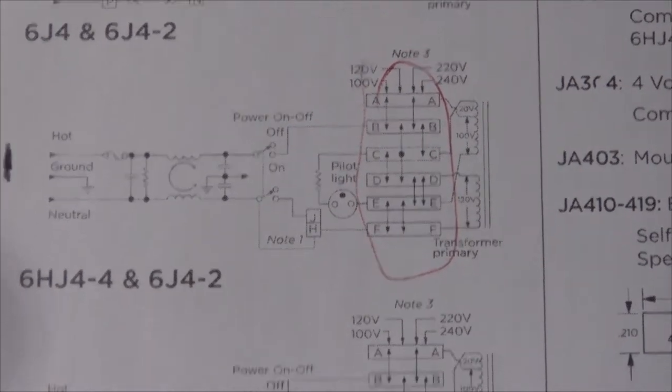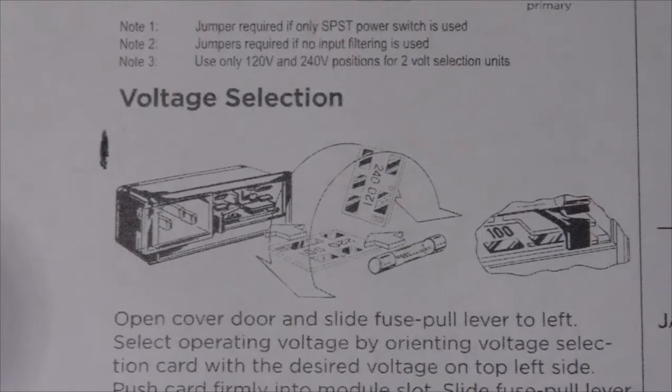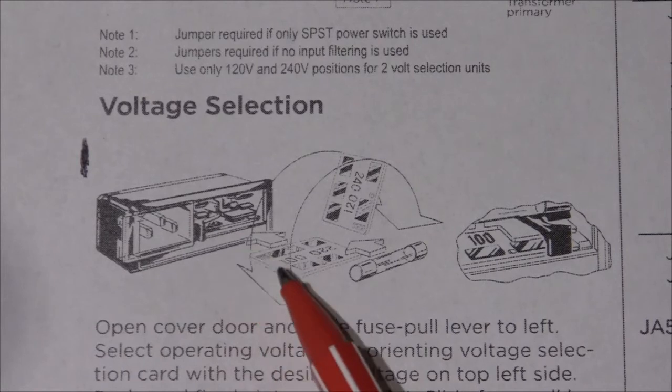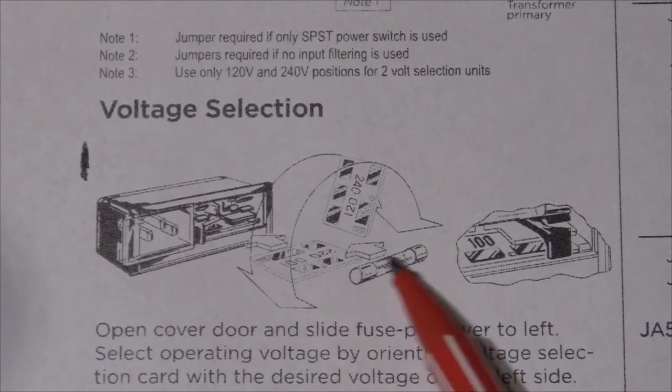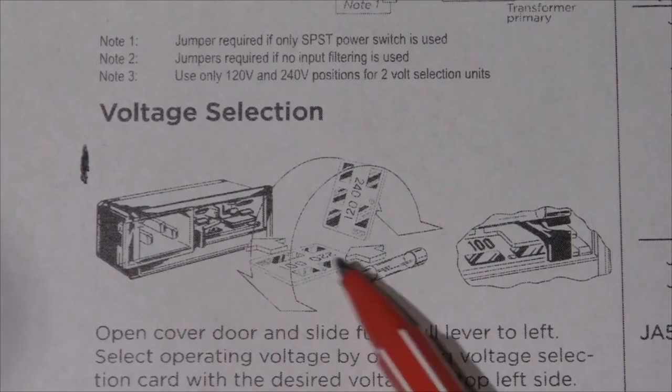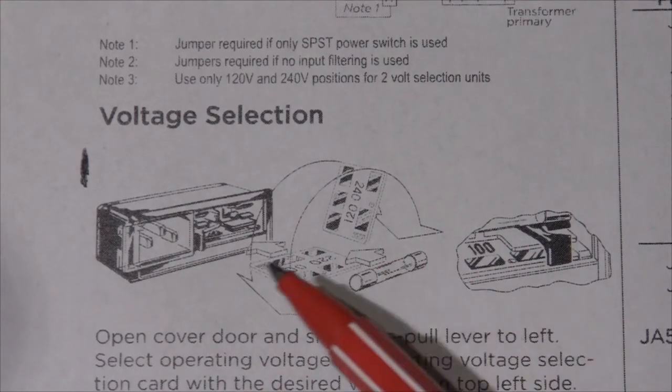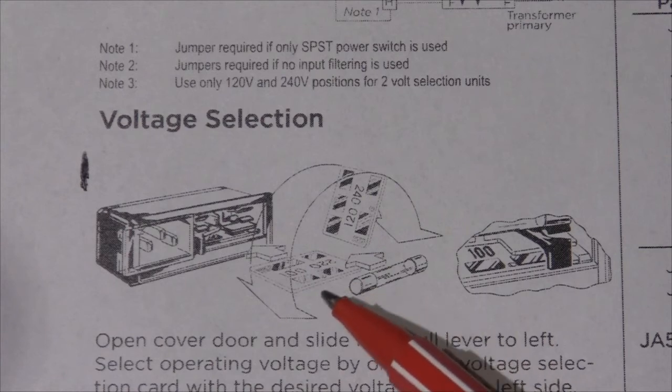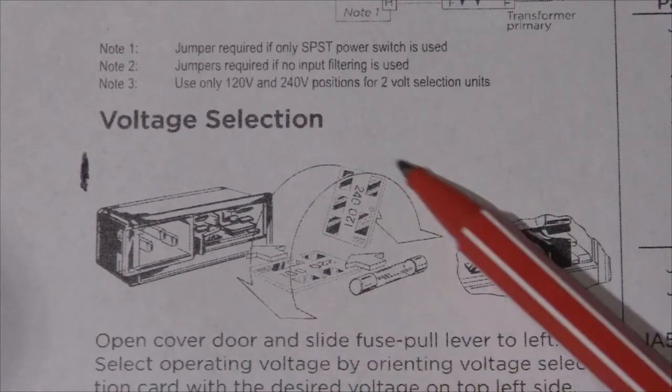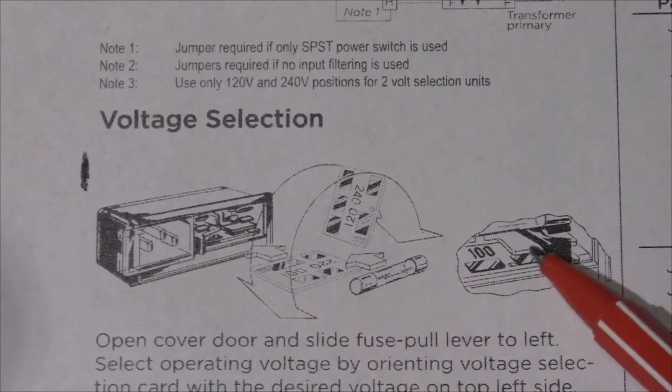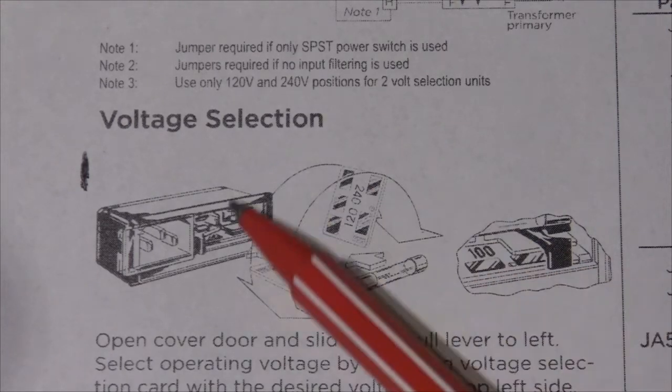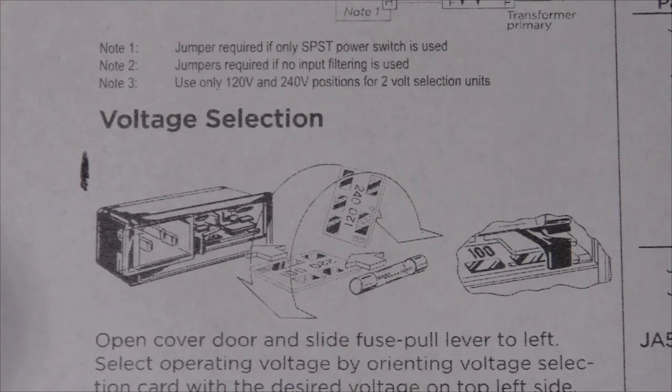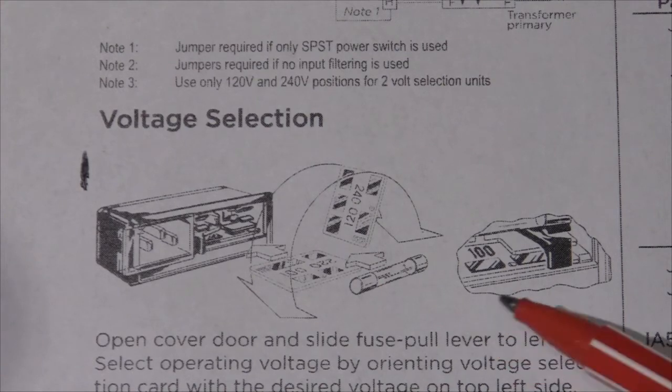And something really interesting that I probably should have known before I started is shown here in that there's a little board that can be pulled out. You have to remove the fuse and then you pull out the board. And you flip it over and then automatically it will rewire internally. And then connect the correct transformer windings based on this little board here. So actually I shouldn't have pulled it out from the box. I didn't have to go through looking at the transformers and whatever.